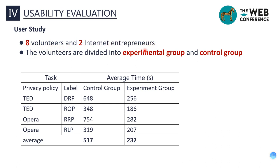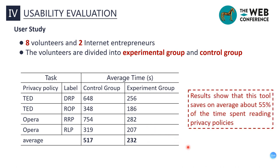For the usability evaluation, we designed four tasks from two privacy policies, TED and Upload apps, each corresponding to one regulation in GDPR. We conducted the evaluation on eight volunteers and two internet entrepreneurs, divided into an experiment group and a control group. The experiment group read the privacy policy with our tool, and the control group read without any assistance. The average time of the control group was 517 seconds, and the experiment group was 232 seconds, showing our tool saves an average of about 55% of time on reading privacy policies.